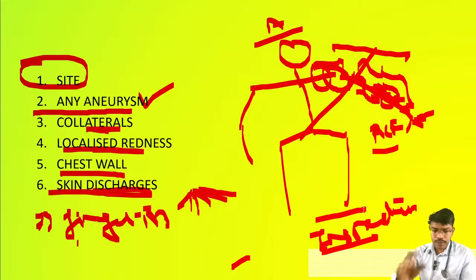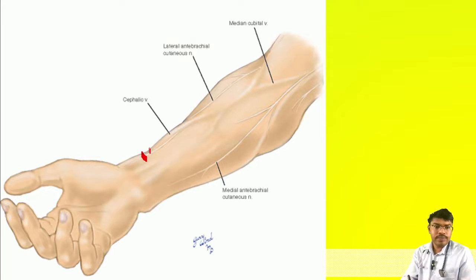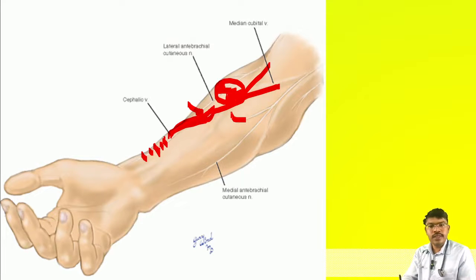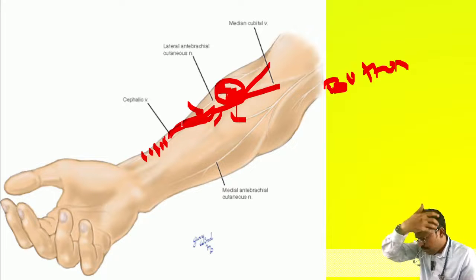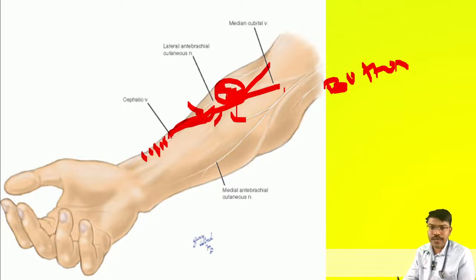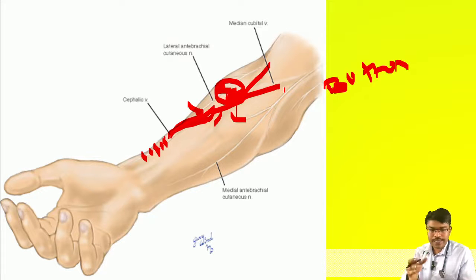Ideally, the suture site should be healthy — no aneurysm, redness, localized swelling, or hematoma. The vein should not be excessively prominent; with experience, you'll know how prominent it can be. There are two types of needling techniques: buttonhole and rope ladder. You must look at the needling site, because with the buttonhole technique the patient might develop localized abscess over a long period. The examiner may ask what kind of cannulation technique the patient used, which you can often determine from the needling site appearance.